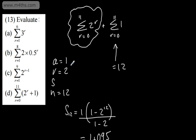So there we go — a basic introduction to sigma notation. Sigma means to sum. You identify a, r, s, and n, set up your geometric series formula, and then simply consider any additional constant terms that need to be added on.